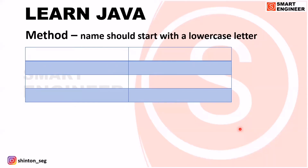Now we can discuss methods. In a method, the name should start with a lowercase letter — in contrast to class, where the name starts with an uppercase letter. Let's discuss some method names. If a method name starts with an uppercase letter, it is wrong, because a method name should always start with a lowercase letter.